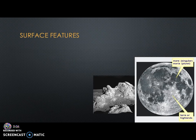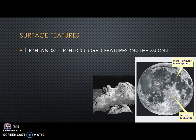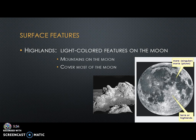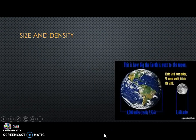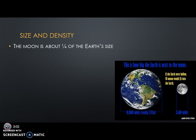The third feature is the highlands. Highlands are lighter in color and cover most of the moon's surface. We consider them to be mountains on the moon, though they weren't formed the same way as Earth's mountains via tectonic plates. We believe they're the outer rims of craters that created these higher-up areas, though their origins are somewhat of a mystery.